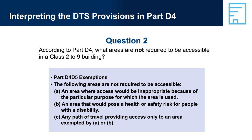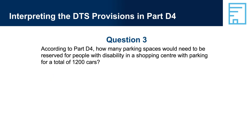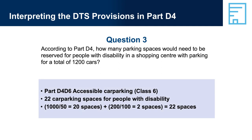Question 3: According to Part D4, how many parking spaces would need to be reserved for people with disability in a shopping centre with parking for a total of 1,200 cars? Answer: Part D4-D6 Accessible Car Parking, Class 6 — 22 car parking spaces for people with a disability. 1,000 divided by 50 equals 20 spaces, plus 200 divided by 100 equals 2 spaces, totalling 22 spaces.